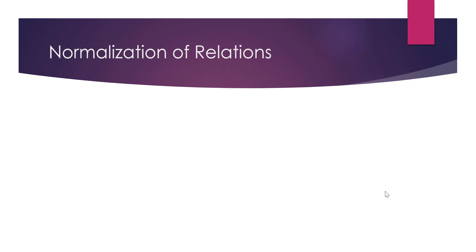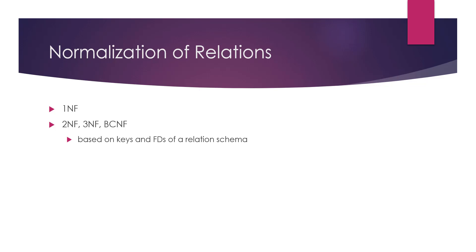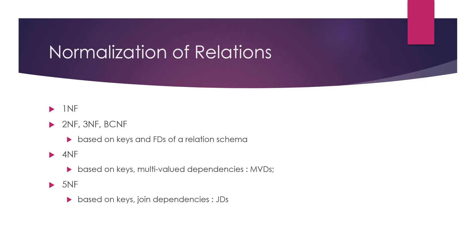Now let's look at the actual normalization process and the different normal forms. The first normal form is based on the attributes themselves. The second, third, and Boyce-Codd normal forms are based on the keys and functional dependencies of a relation schema. We also have the fourth normal form, based on keys and multi-value dependencies, and the fifth normal form, based on keys and joint dependencies. As a designer, you do not need to go to the highest possible normal form — sometimes we leave relations in a lower normal form to improve database performance. In the industry, we typically aim for the Boyce-Codd or third normal form.